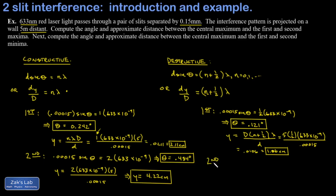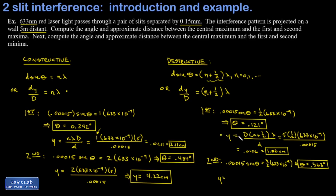For the second minimum (n = 1), we plug in n = 1, giving a factor of 3/2 in the formula. The angular location is 0.363°. For the distance y, using D × (3/2) × λ / d — that's 5 × 1.5 × 633 × 10⁻⁹ / 0.00015 — we get 3.17 cm off center for that second dark line.